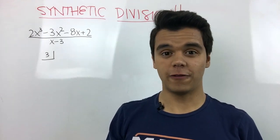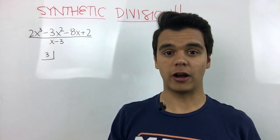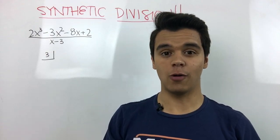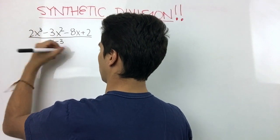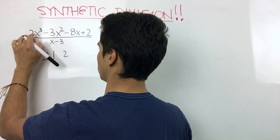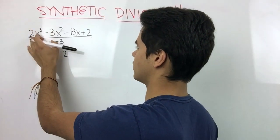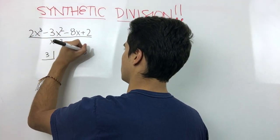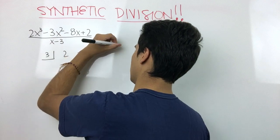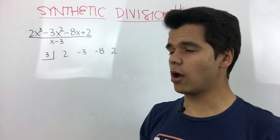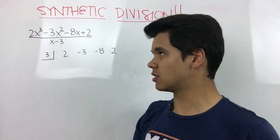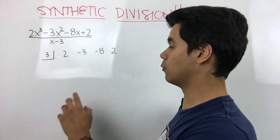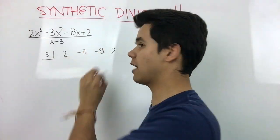Next we're going to take all the coefficients of our polynomial and write them down. So we have 2 which goes with x cubed, then negative 3, then negative 8, and then 2. If we didn't have a number for any position, say this negative 3x squared didn't exist, we would still write a zero in that position.